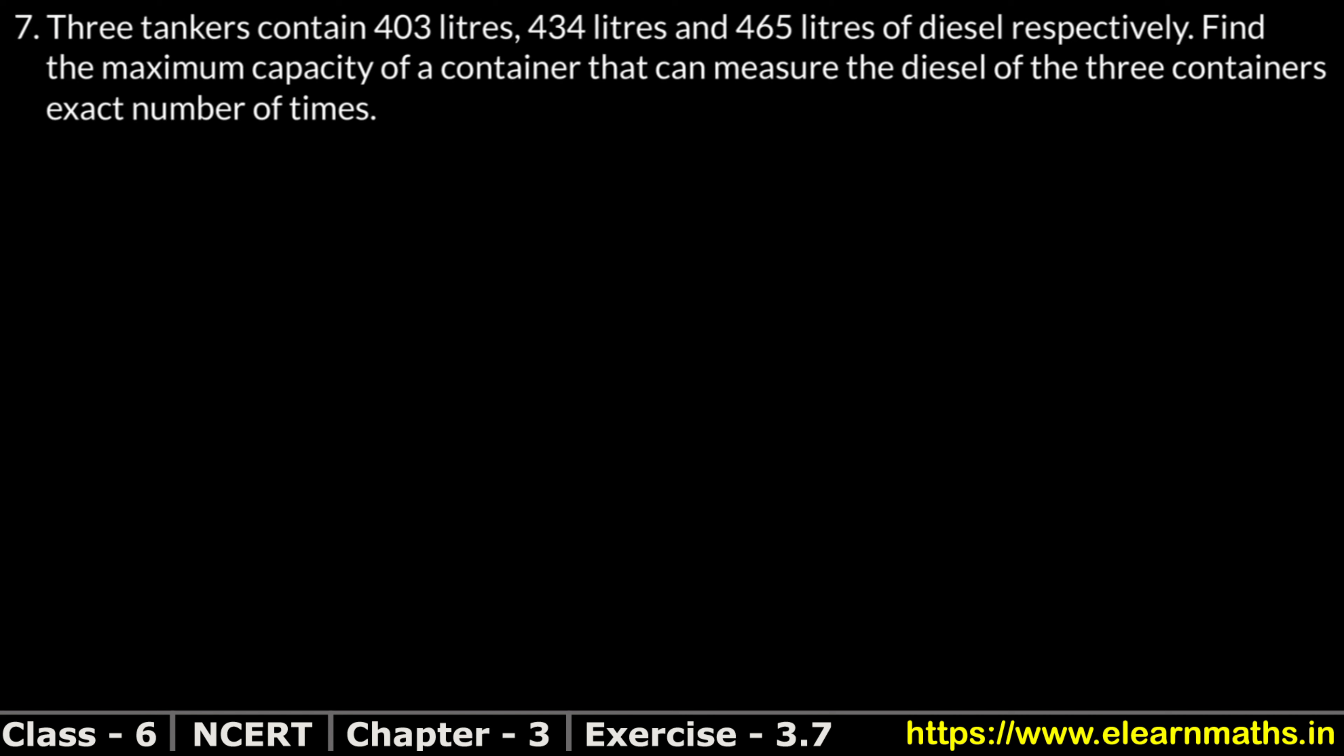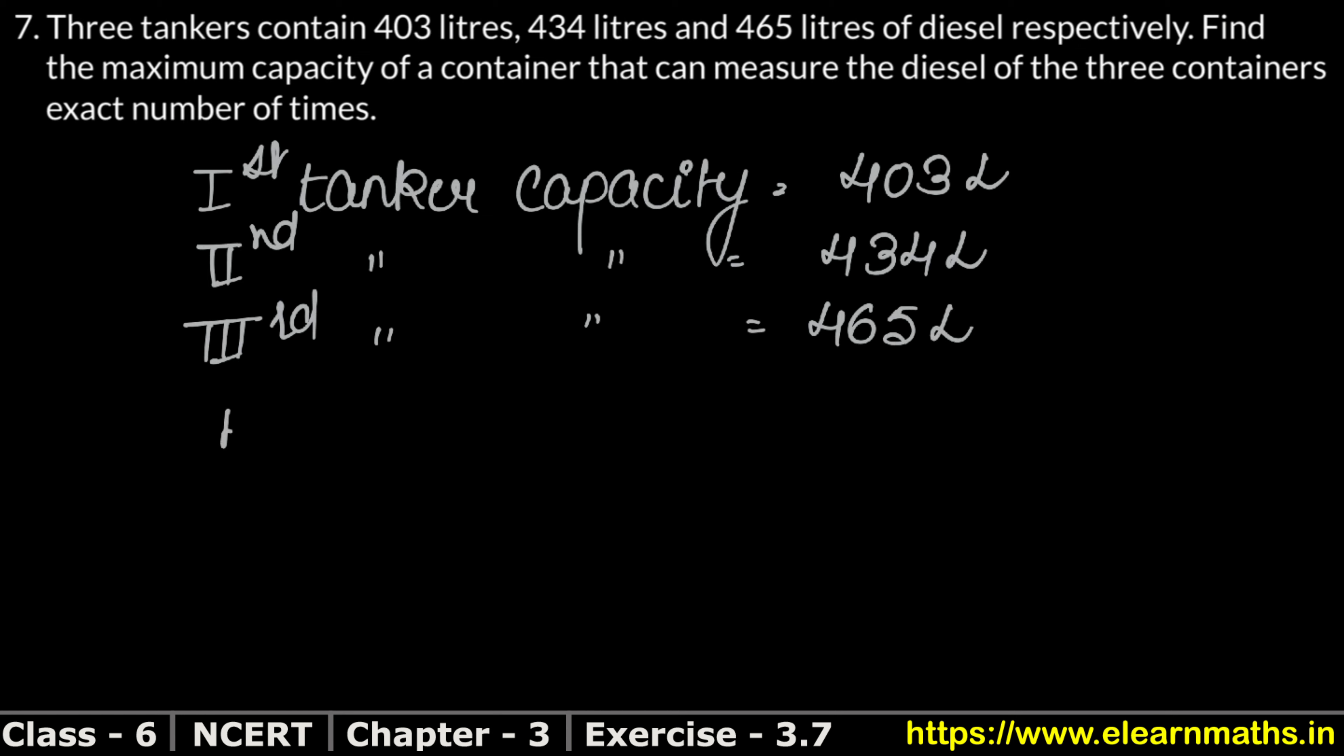So let's write. What is capacity? First tanker capacity is 403 liters. Second tanker capacity is 434 liters. And third tanker capacity is 465 liters. Now we need to measure HCF. We need to measure exact number of times, the maximum capacity of the 3 containers of diesel.